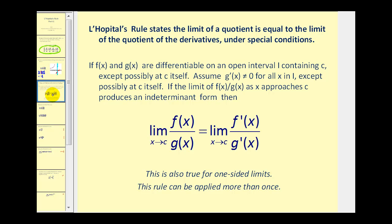L'Hopital's Rule gives us a different technique for evaluating limits of indeterminate form. It states the limit of a quotient is equal to the limit of the quotient of the derivatives, under special conditions. F and g are differentiable on an open interval containing c, except possibly at c, where c is the value we're approaching. We also assume the derivative of g is not equal to zero for all x in the interval, except possibly at c. If these conditions are met and the limit produces an indeterminate form, then the limit of the quotient equals the limit of the quotient of the derivatives. This rule also applies to one-sided limits and can be applied more than once.